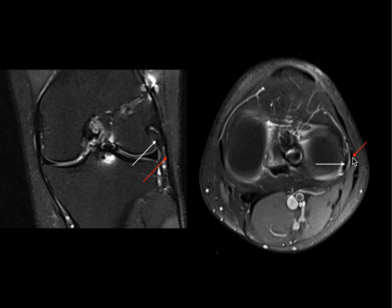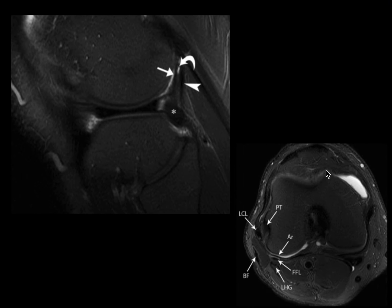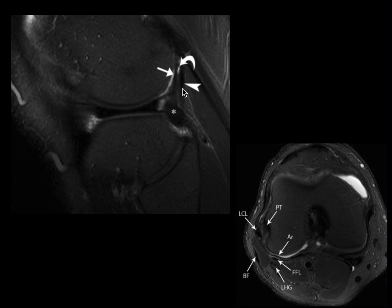Another important structure is the fabelofibular ligament. In the presence of a fabella, you can clearly see the fabelofibular ligament. In the absence of the fabella, it arises from the femur and is again very thin. The sagittal plane again shows the fabella and the ligament connecting the fabella to the fibula — the fabelofibular ligament. Thicker structures such as the lateral collateral ligament and popliteus tendon are more easily visible. The arcuate ligament is seen in the sagittal section, and the hyperintense structures on PD fat-sat represent the inferior genicular vessels, which are always interposed between the arcuate ligament and the lateral collateral ligament. The popliteus tendon goes deeper to both the lateral collateral ligament and the arcuate ligament complex.